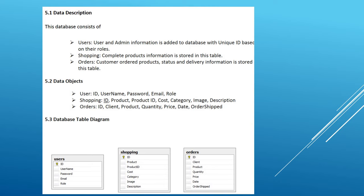Data objects include: user ID, username, password, email, role. Shopping ID, product, product ID, cost, category, image, descriptions. Order: order IDs, client, product, quantity, price, date, order ship. Testers should know this basic information. For example, when you track your order and see your order details, that data is coming from the database and being patched through APIs.